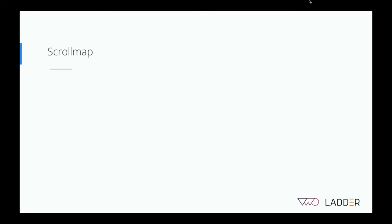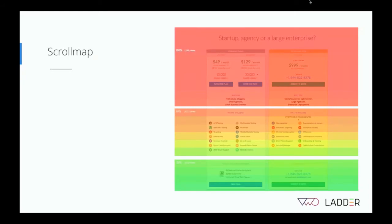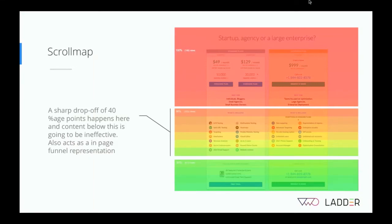Next is scroll maps — similar to a heat map but helping you understand scroll patterns, think of it as an in-page funnel. It gives a sense of how far down visitors are scrolling on a single page, where they drop off, and where they engage. For example, on our own pricing page at vwo.com, we noticed a sharp drop-off of around 40 percentage points in a features section. This meant content beneath that fold could be rendered ineffective. Scroll maps help you identify problem areas and consider reorganizing content to keep visitors engaged.